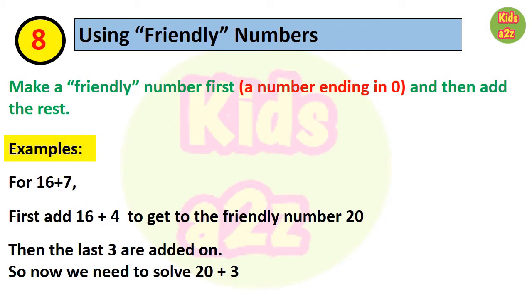Next is using friendly numbers. The strategy is to make a friendly number first. A friendly number means a number ending in 0, and then add the rest with that number. For 16 plus 7, we need to first add 4 to 16 to get the friendly number 20. Now we have already taken 4 from 7, so only 3 is left. Now we need to solve 20 plus 3, which is a much easier equation than 16 plus 7.